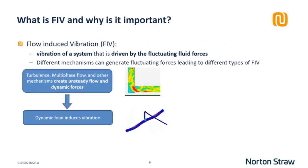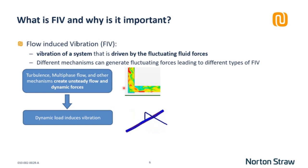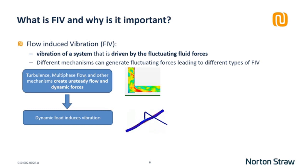Flow-induced vibration, or FIV, refers to any vibration of a structural system driven by fluctuating fluid forces acting on the structure. The animation shown here illustrates a fluctuating velocity distribution in a turbulent fluid flow. As these velocity fluctuations travel through the system, they induce pressure and shear stress fluctuations on the walls of the piping. If these force fluctuations are large enough and at frequencies close to the natural frequency of the structure, they can induce higher amplitude structural vibrations. Different fluid mechanisms can generate fluid force fluctuations, leading to different types of FIV.